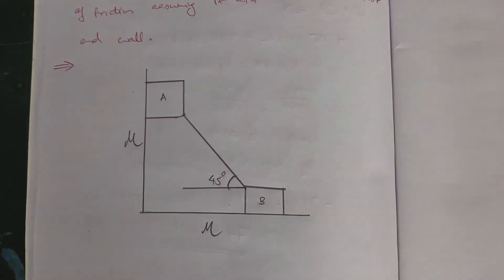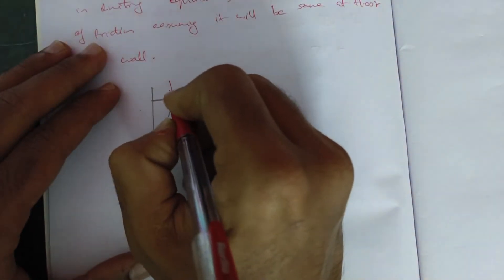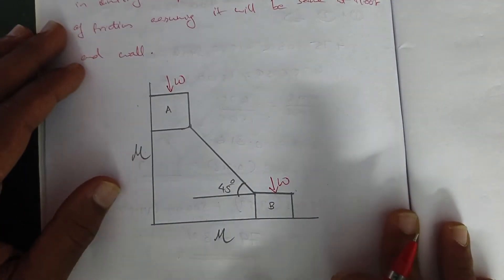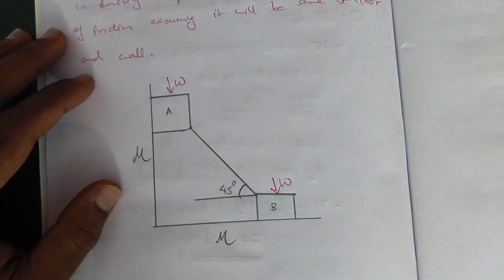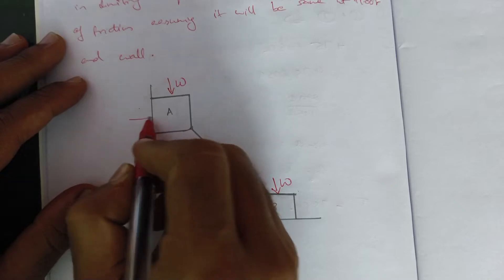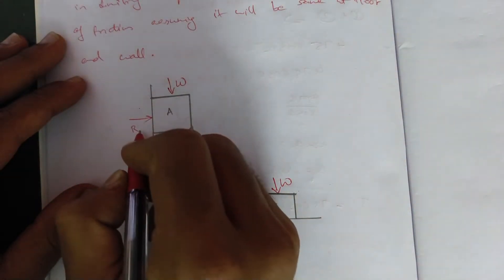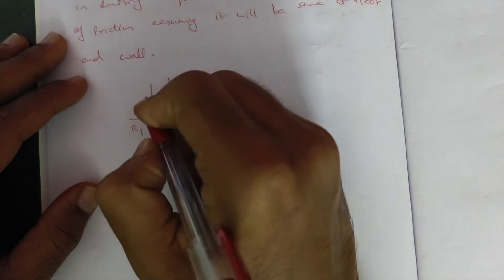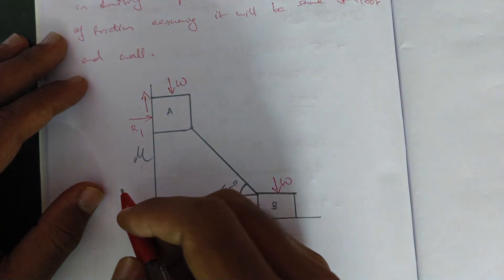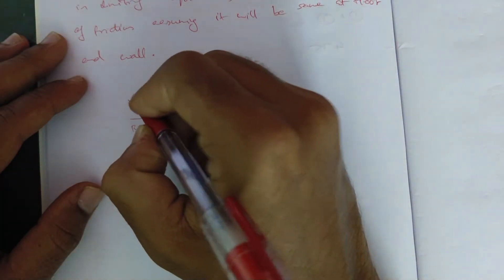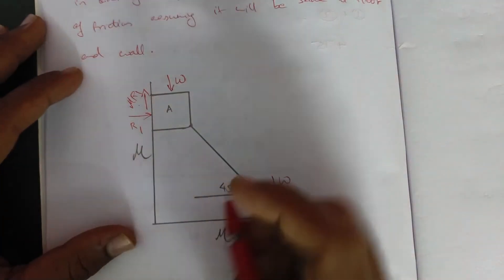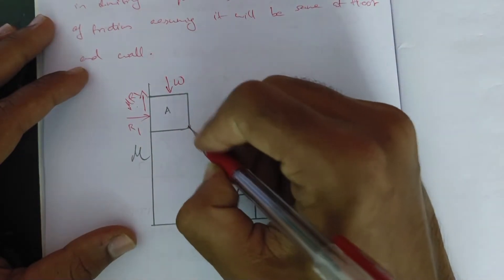If you have a problem, use a free body diagram. I will show you the weight W. Here is the weight W. Here is the reaction R. If there is a tendency for the block to move, I will show you the friction position: mu R. F1 equals mu R.